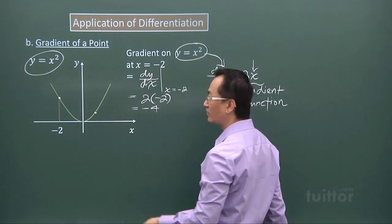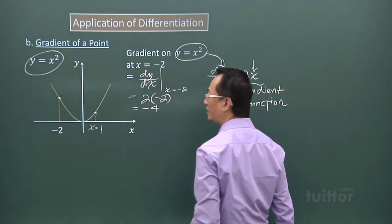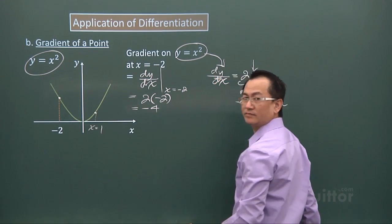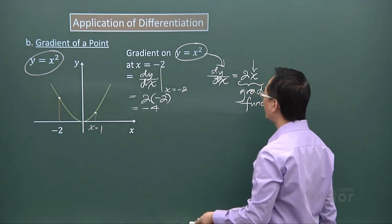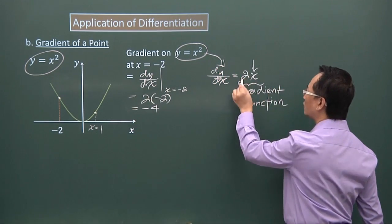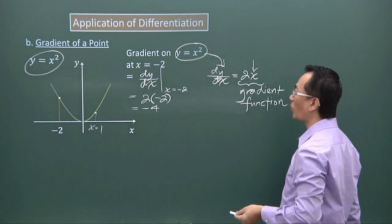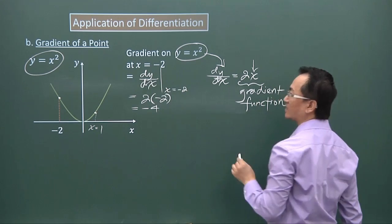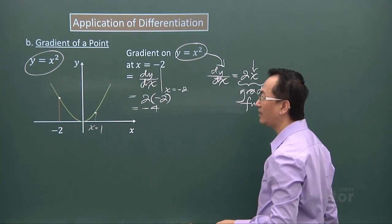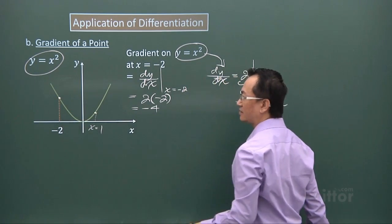If I want to find the gradient of that point over there, and at that point the x value is 1, you can see straight away the gradient will be 2. I take this expression 2x and put in the value x equals 1: 2 times 1 is 2. So with this powerful idea of dy/dx as the gradient function of the curve, I can literally find the gradient of every point on the curve.